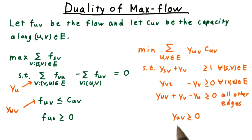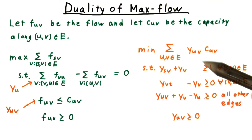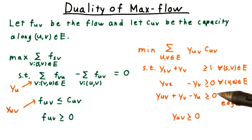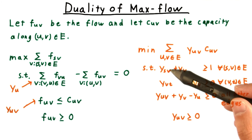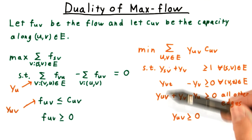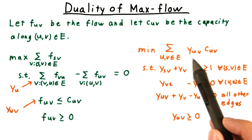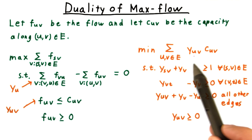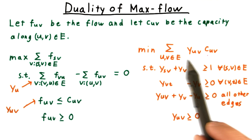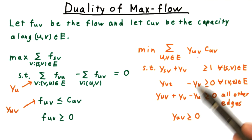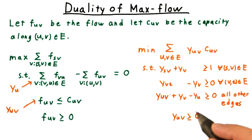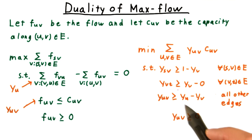And of course, these dual variables have to be non-negative. The interpretation of these dual variables can be a little tricky, so I'm going to rearrange them to isolate the two-indexed variables — the ones corresponding to edges and the ones that appear in the objective function — on the left-hand side. This makes it a little easier to see what's going on.